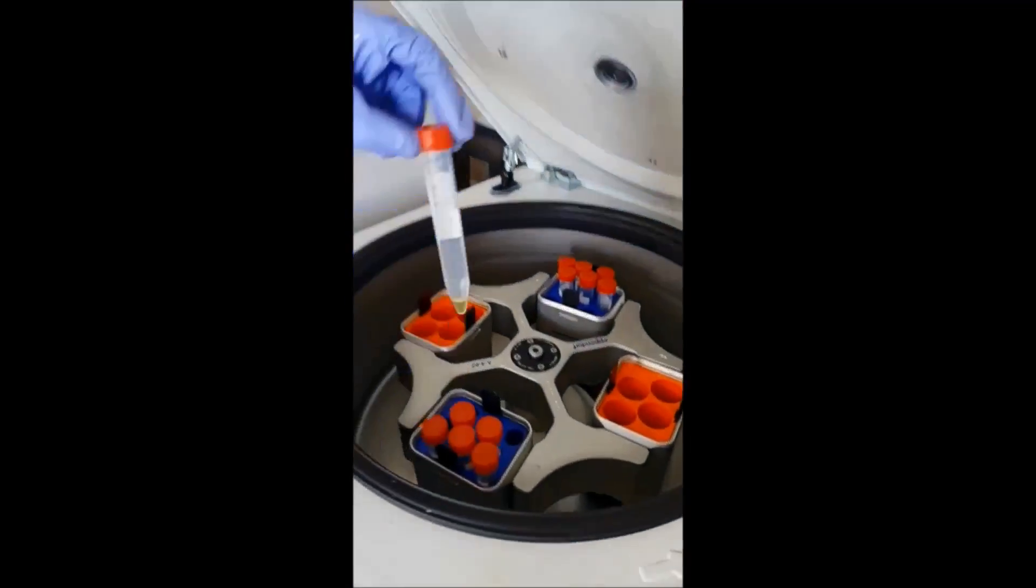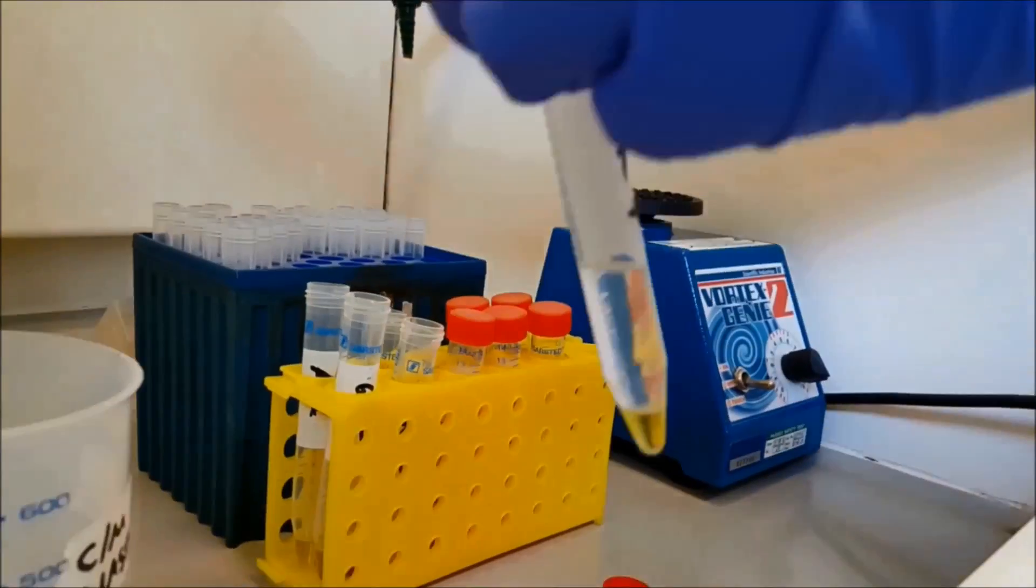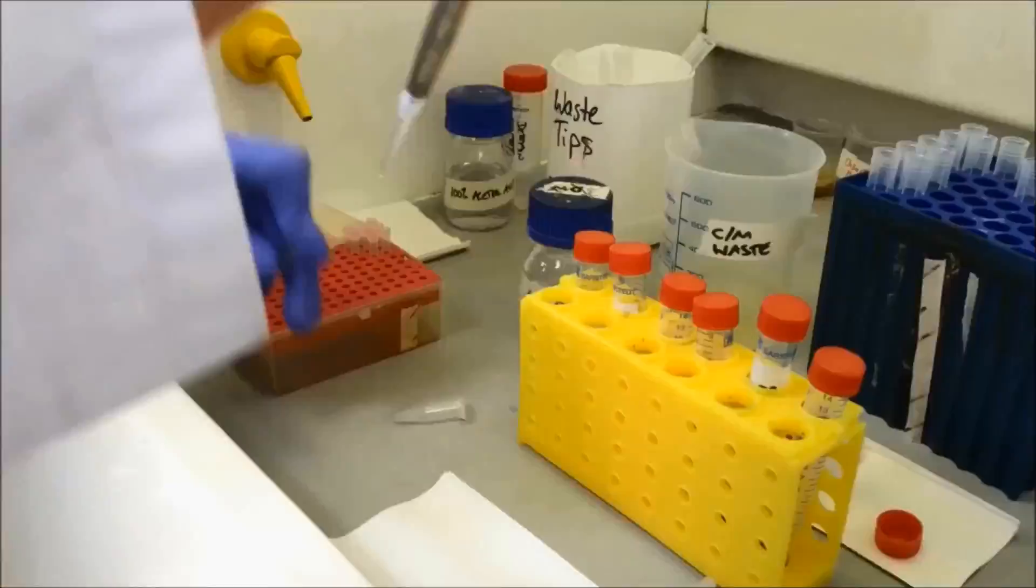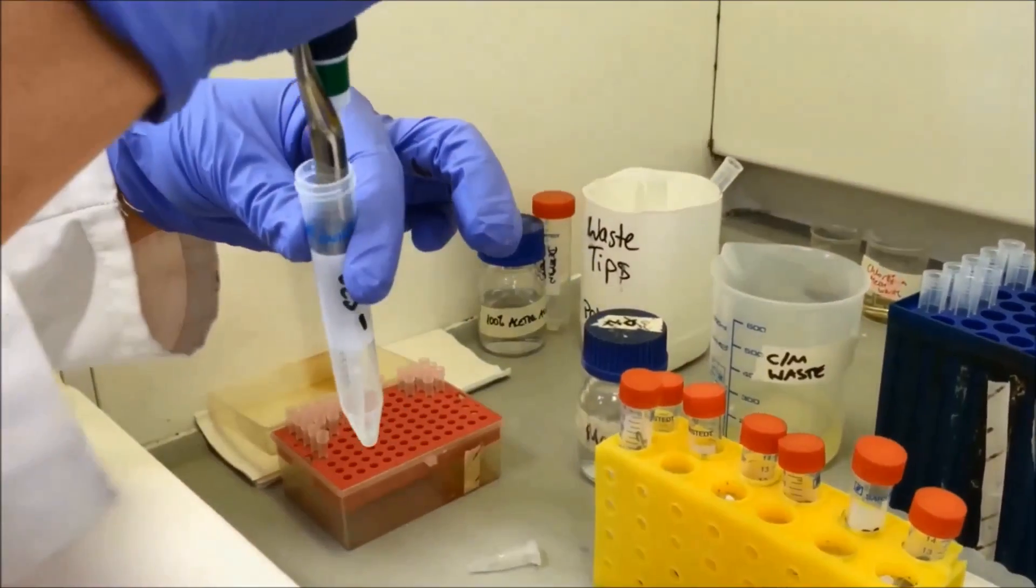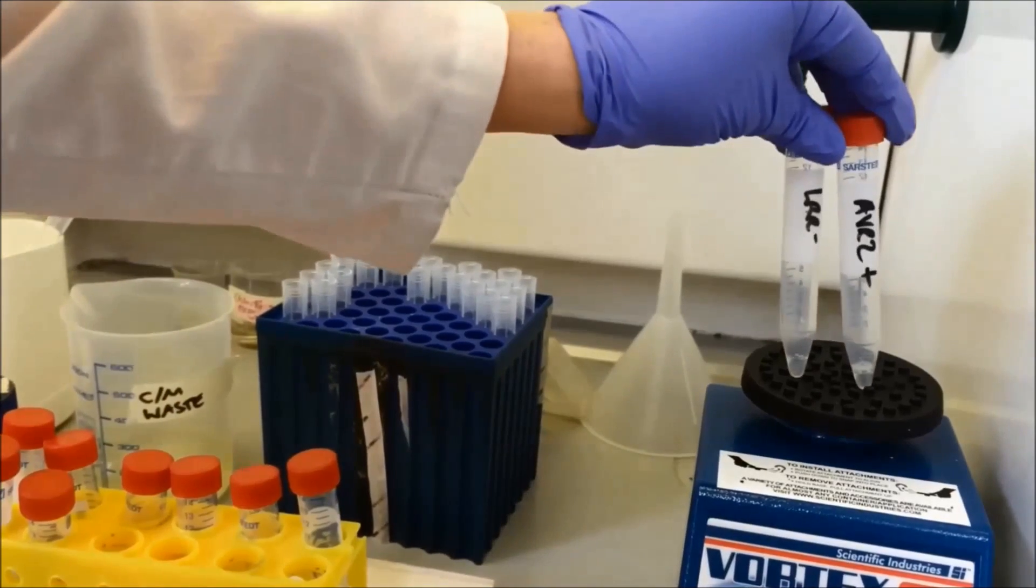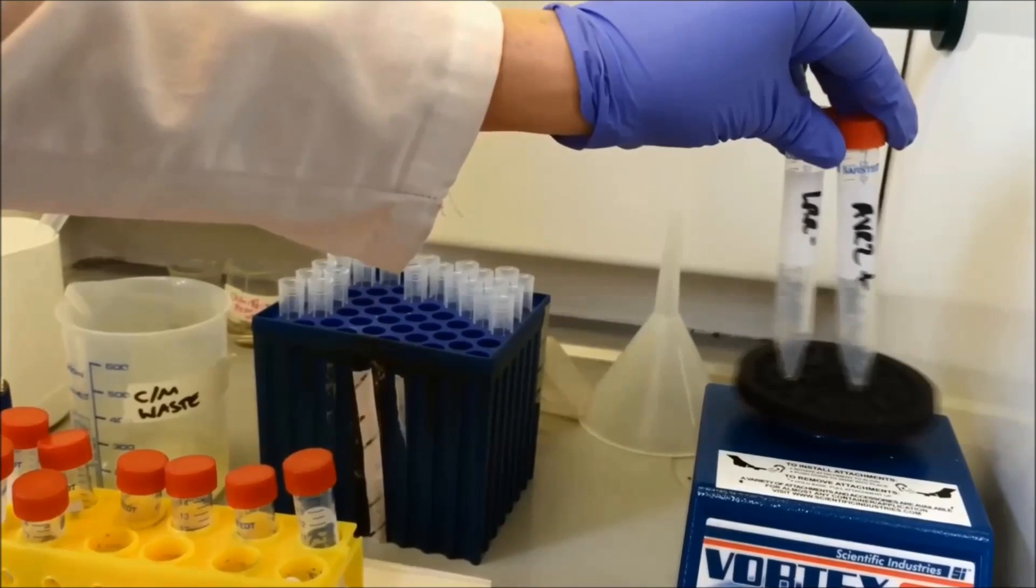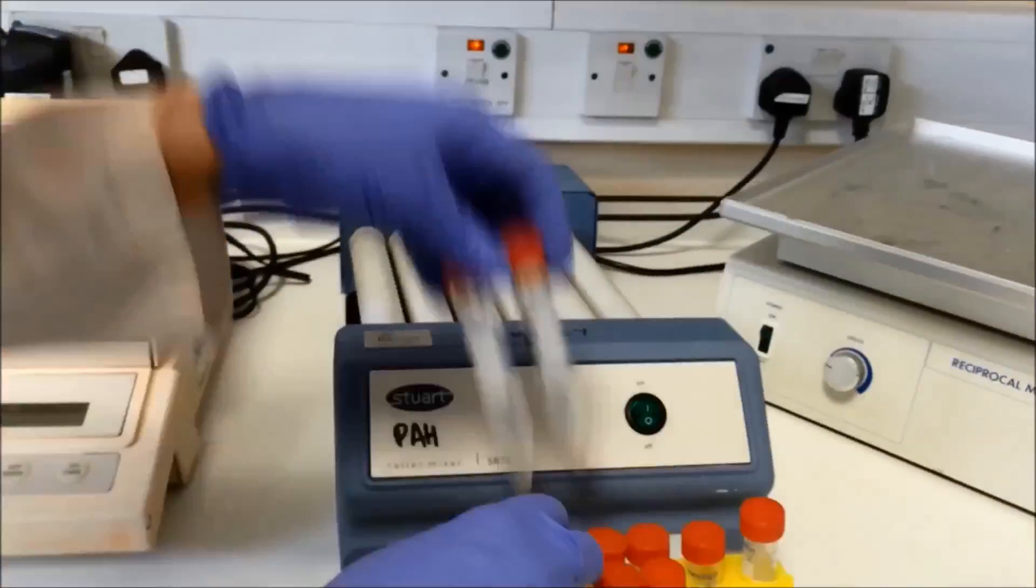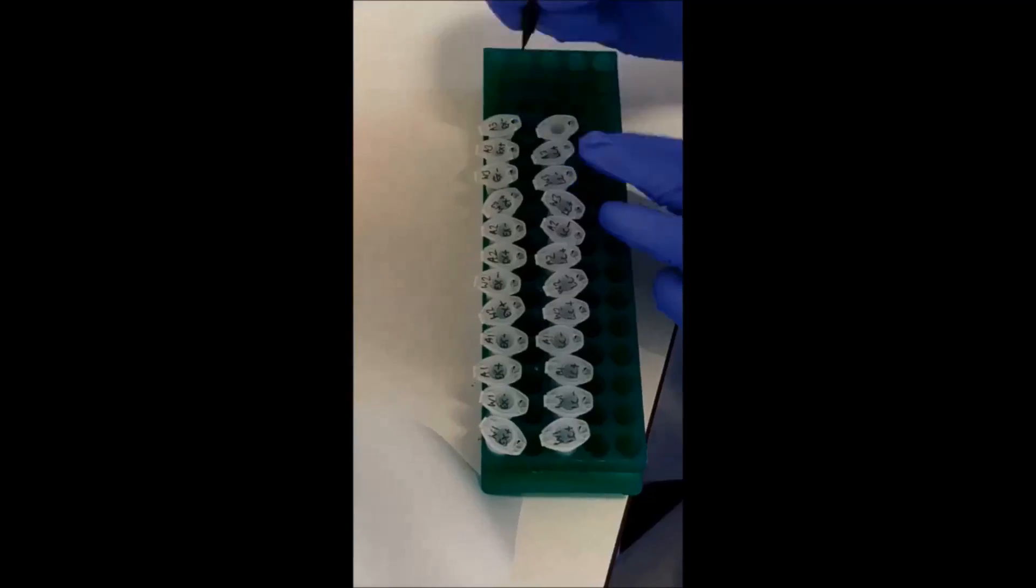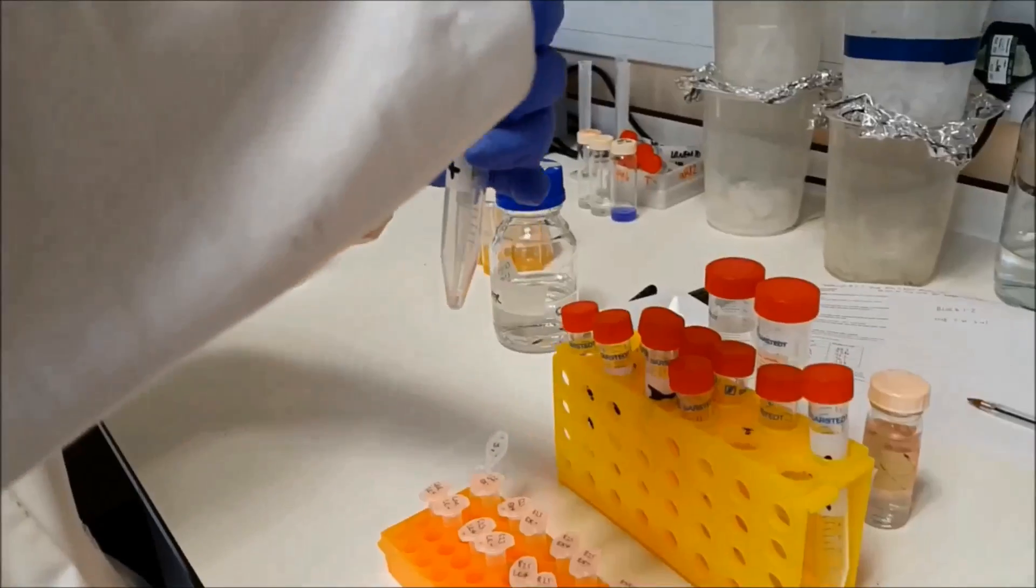We use a centrifuge to spin the sample tubes very quickly. This brings everything together in the bottom of the tube. We use a vortexer to thoroughly mix the samples. We spend a lot of time opening, closing, and labeling tubes.